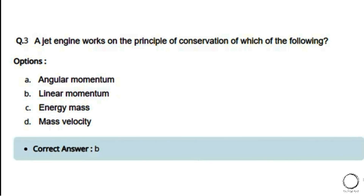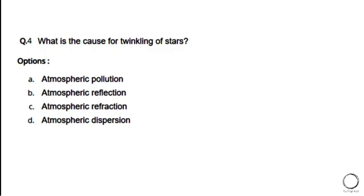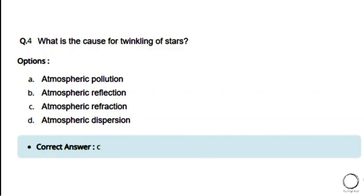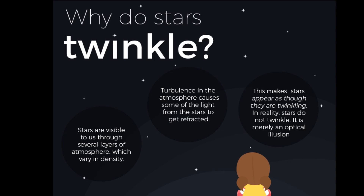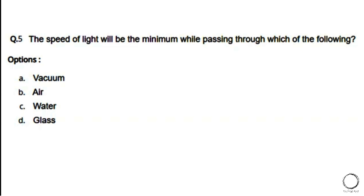Next: What is the cause of twinkling of stars? Options: a) atmospheric pollution, b) atmospheric reflection, c) atmospheric refraction, d) atmospheric absorption. The right answer is option C — atmospheric refraction. As you can see in the image, stars are visible to us through several layers of atmosphere which vary in density. Turbulence in the atmosphere causes some of the light from stars to get refracted, making stars appear as though they are twinkling. In reality, stars do not twinkle — it is merely an optical illusion.